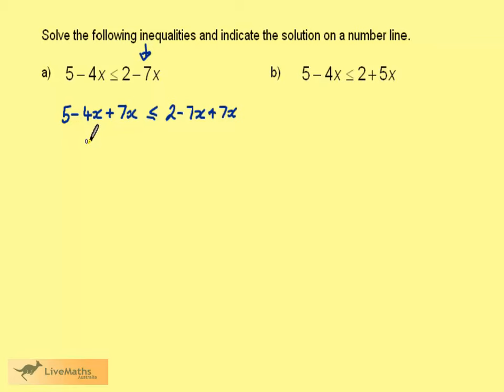On the left we have 5 and plus 3x. On the right we just get left with the 2. Now subtract 5 from both sides. We have 3x is less than or equal to 2 take away 5 which is minus 3.